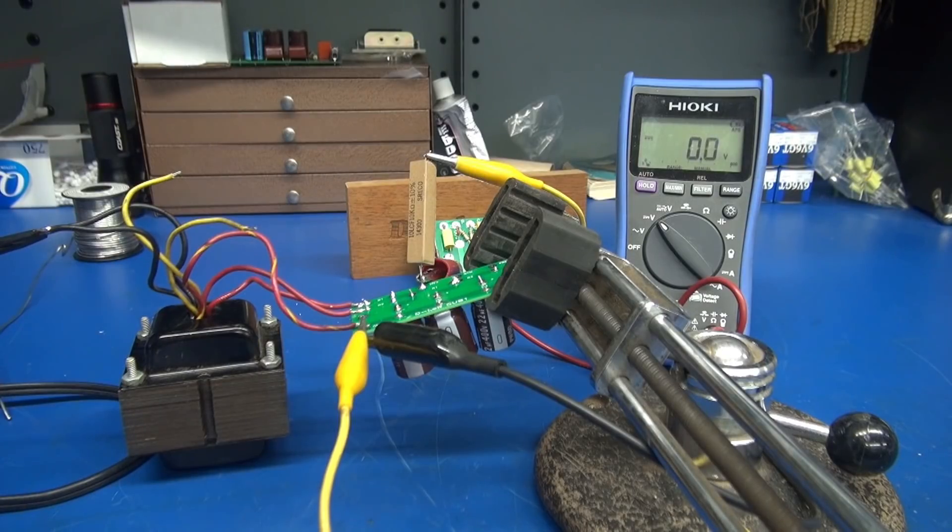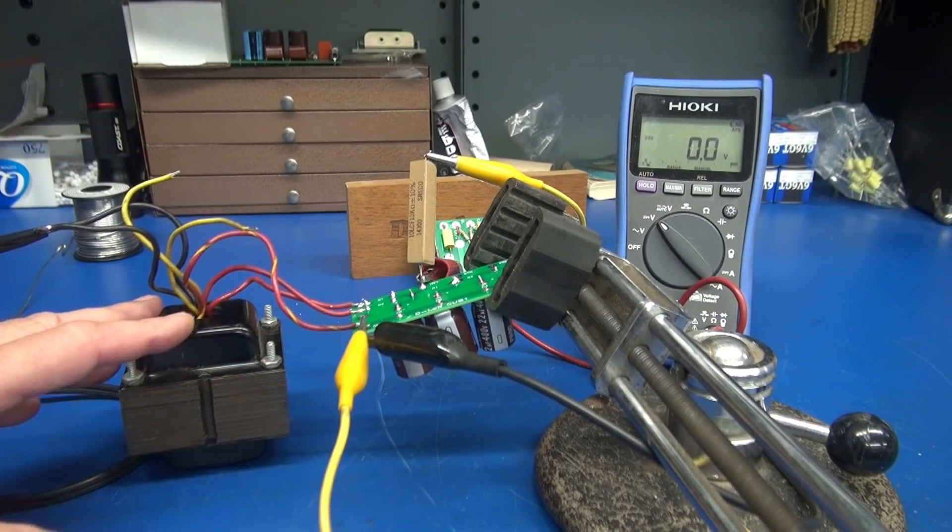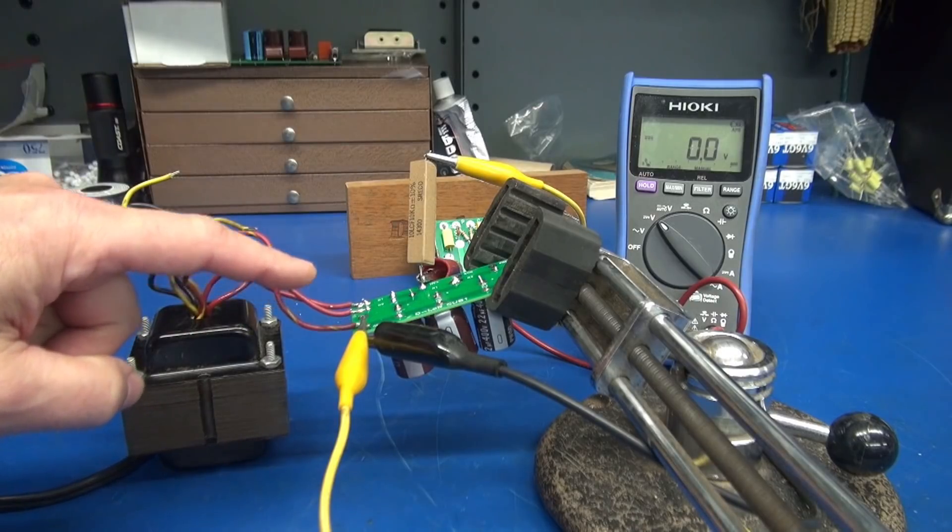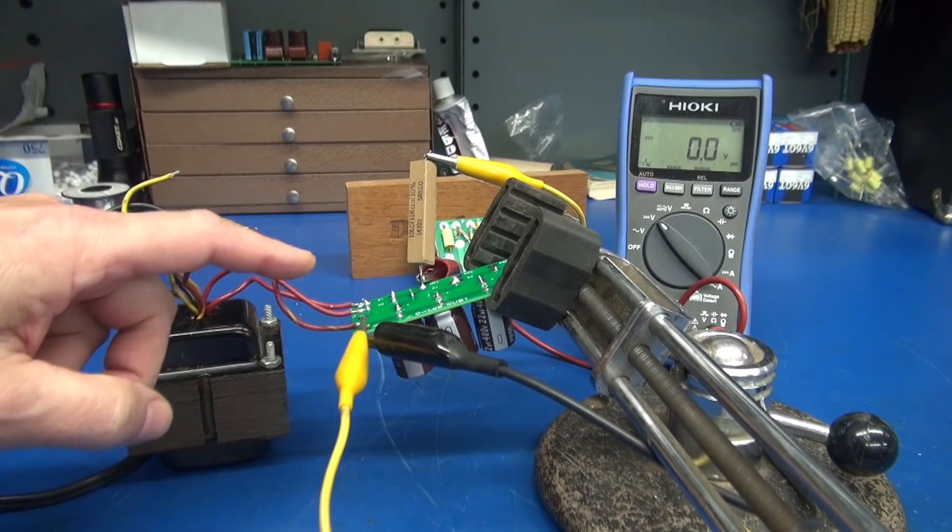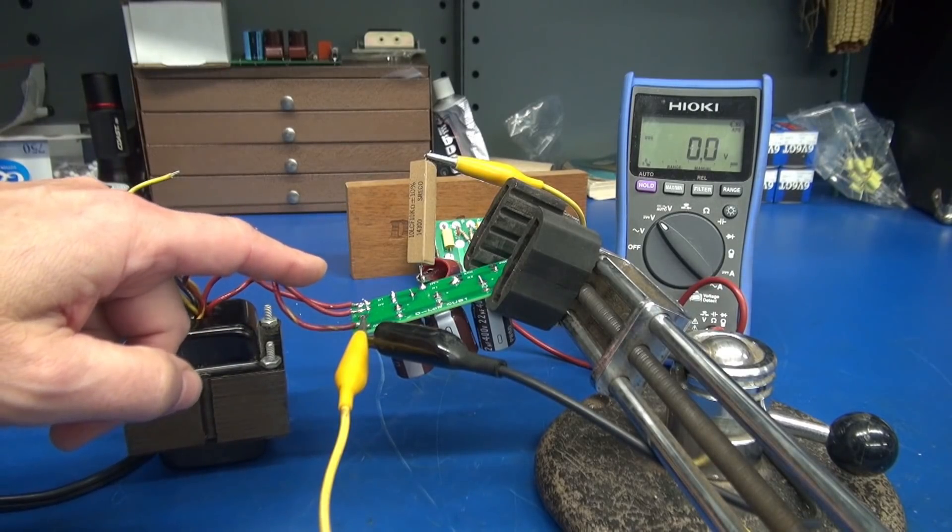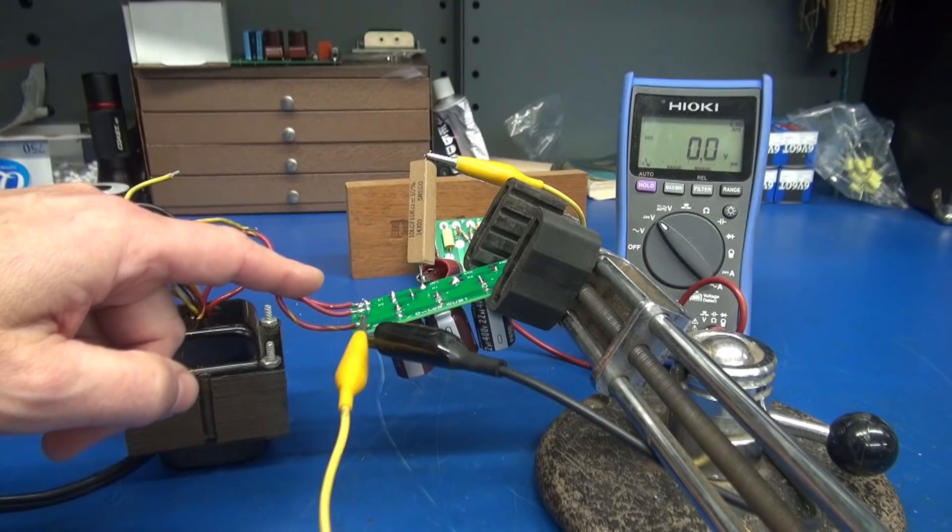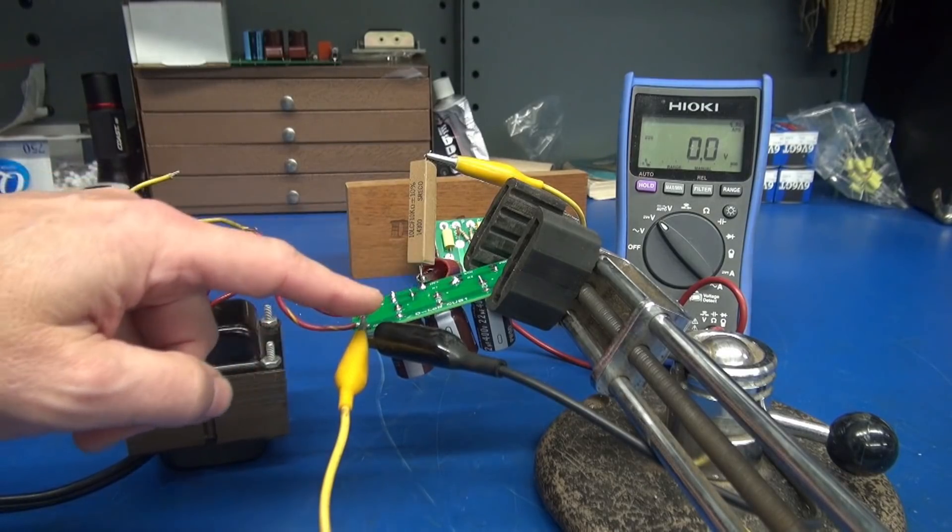All right, now we're set up to test high voltage under a load. So we have the transformer going to the Cub1 circuit board. It rectifies it. There's a pair of 1N4007 diodes and then of course it has a string of filter caps.